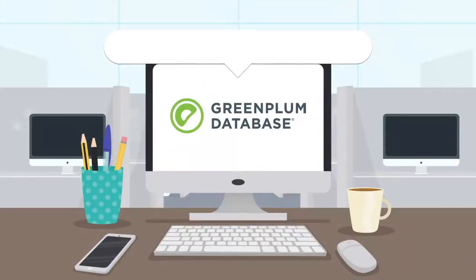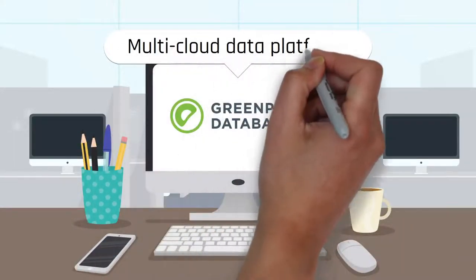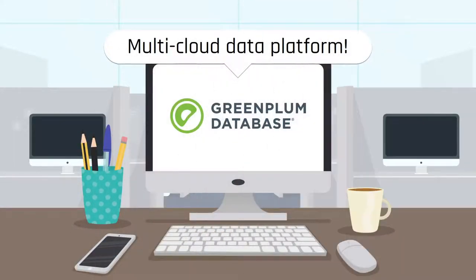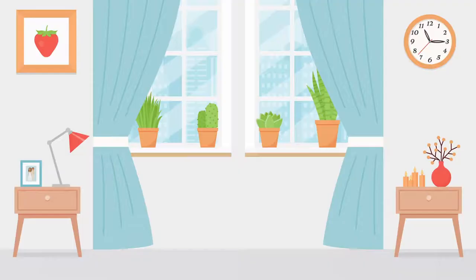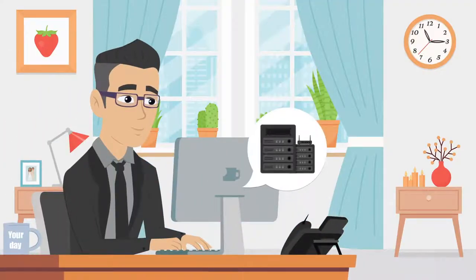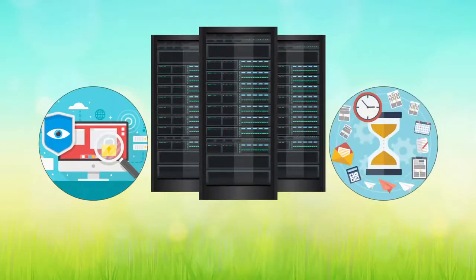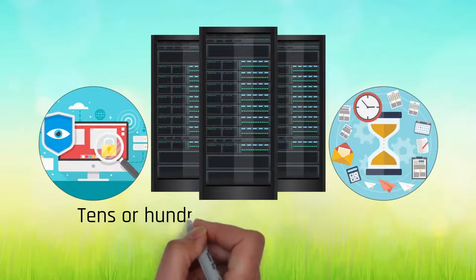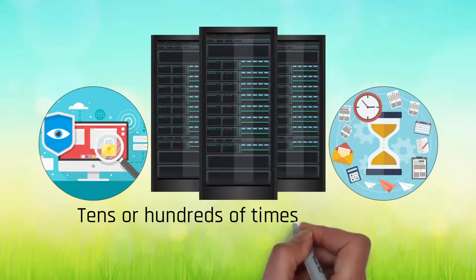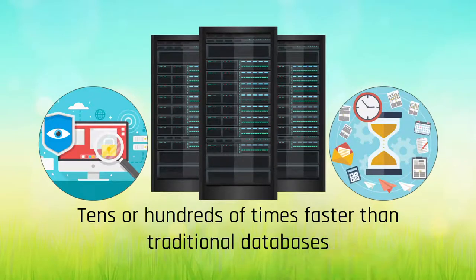Greenplum is the first open-source multi-cloud data platform built for advanced analytics in the world. With massively parallel processing architecture, Greenplum can run parallel queries against huge amounts of data tens or hundreds of times faster than traditional databases.